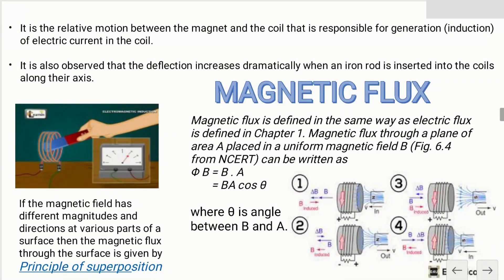The first concept is magnetic flux. As we have already studied electric flux—the amount of electric field lines passing per unit area through an object—similarly, magnetic flux is the number of magnetic field lines passing through a plane of area when placed in uniform magnetic field. If the magnetic field has different magnitudes and directions at various parts of the surface, the surface is not perpendicular to the magnetic field but placed at some angle.